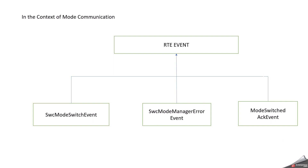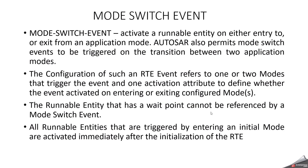In mode communication we have three events: Software Component Mode Switch Event, Software Component Mode Manager Error Event, and Mode Switch Acknowledgement Event. Mode Switch Event activates a runnable entity whenever a mode switch is happening. For example, your software component may have an initial phase, running phase, and stopped phase. Whenever you want to switch between one mode to another, that is exactly where we need the mode switch event. The mode switch event will activate a runnable entity on either entry, exit, or transition from an application mode.